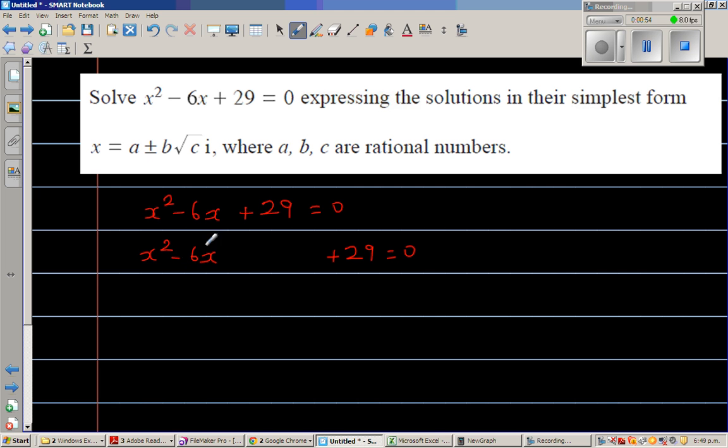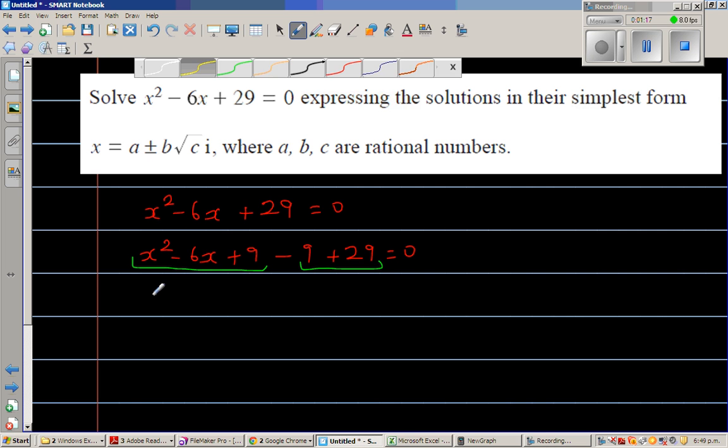You take half of negative 6, which is negative 3, and square it. So negative 3 squared is 9. I'm adding 9 and then taking away 9, so this becomes a perfect square.